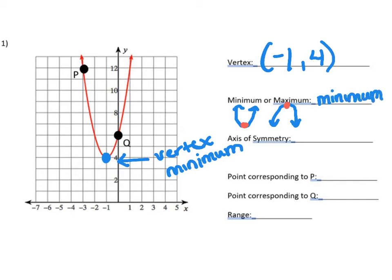For the axis of symmetry, it's the vertical dotted line that goes through the vertex, and we write it as an equation. So our axis of symmetry is x equals the x-coordinate, which is negative 1.